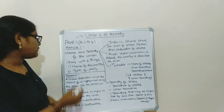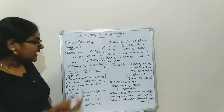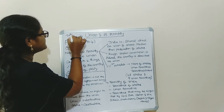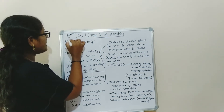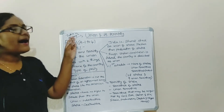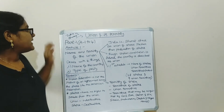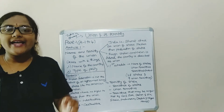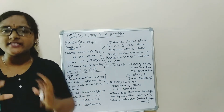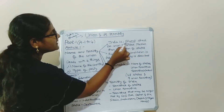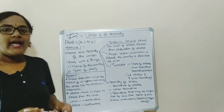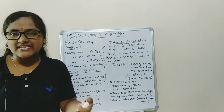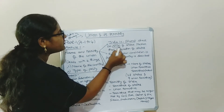Article 1 deals with two things: one is the name of the country and the type of polity. The name of the country is India, that is Bharat. Bharat is a traditional term and India is a modern term. However, our Indian Constitution has adopted these two names as a unique one — India, that is Bharat. The type of polity: our Indian Constitution is described as a union of states.